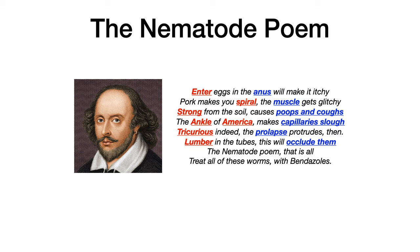Line by line, associate the words in red with the corresponding nematode. For example, 'Enter' for Enterobius, 'eggs in the anus will make it itchy' reminds you the key buzzword is perianal pruritus. Memorize this poem and it will give you the one key buzzword for each nematode. Enter eggs in the anus will make it itchy. Pork makes you spiral, the muscle gets glitchy. Strong from the soil causes poops and coughs. The ankle of America makes capillaries slough. Tricurious indeed, the prolapse protrudes them. Lumber in the tubes, this will occlude them. Treat all of these worms with bendazoles. Good luck.